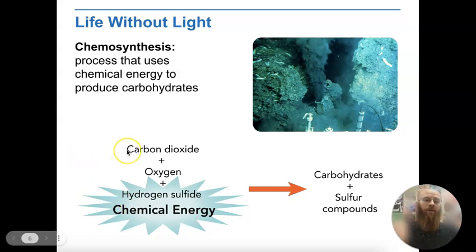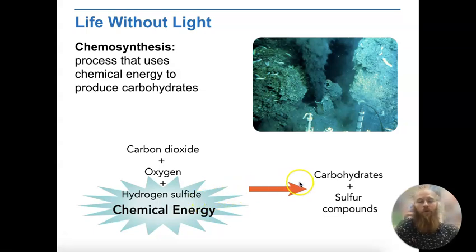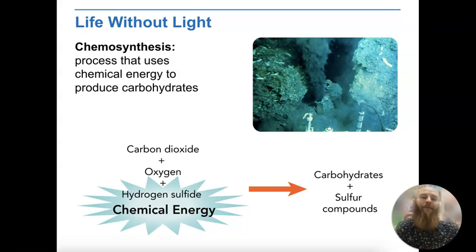In chemosynthesis, we take carbon dioxide, oxygen, and hydrogen sulfide and utilize the chemical energy — the chemical compounds that exist in surrounding environments — to break down those inorganic compounds and convert them into organic compounds that can then be used, with sulfur compounds as a byproduct. The key takeaway is that photosynthesis uses light energy to make the conversion, while in the absence of light, we use chemical energy via chemosynthesis to create that stored form of energy.